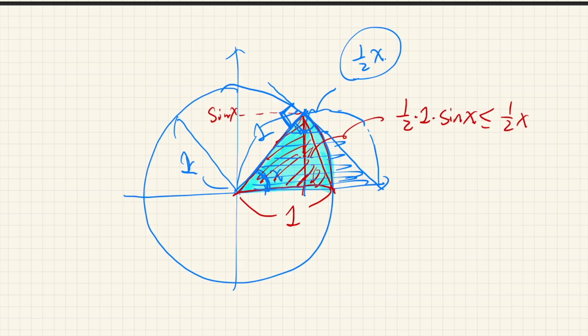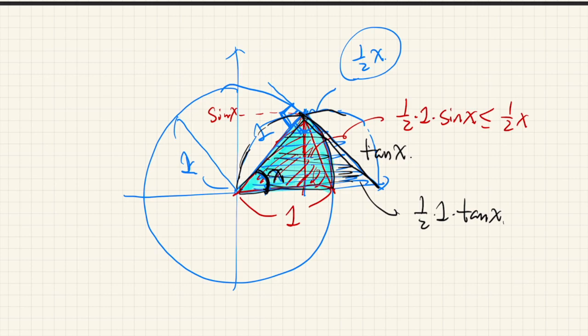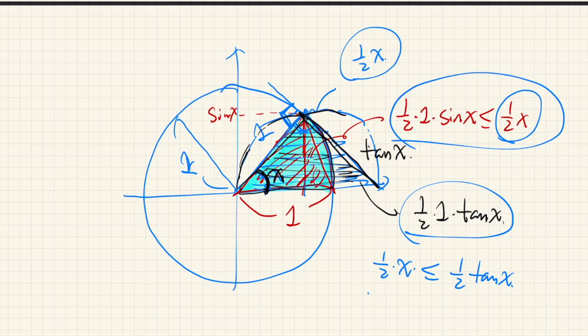The area of this black triangle is 1 over 2 times 1 times tangent x. And this black triangle completely includes this fan-shaped area. So this is greater than 1 over 2x, which means it's less than or equal to 1 half tangent x. So we have this inequality and this inequality.